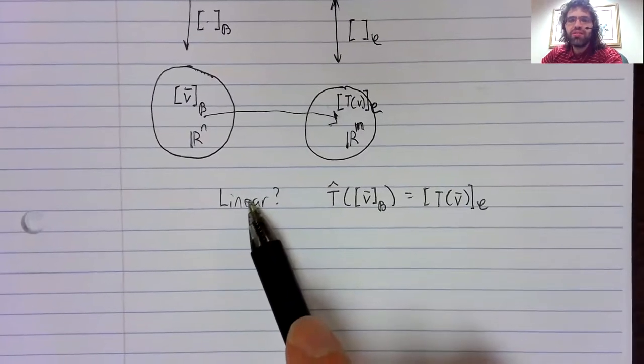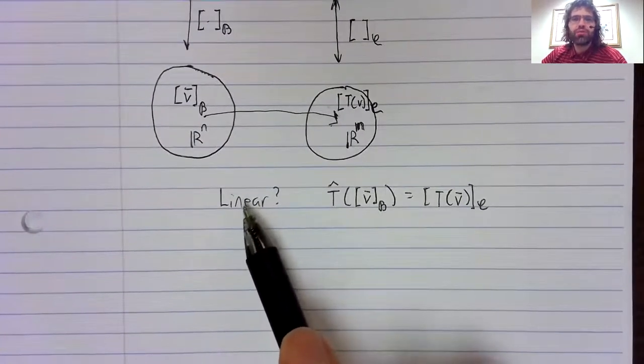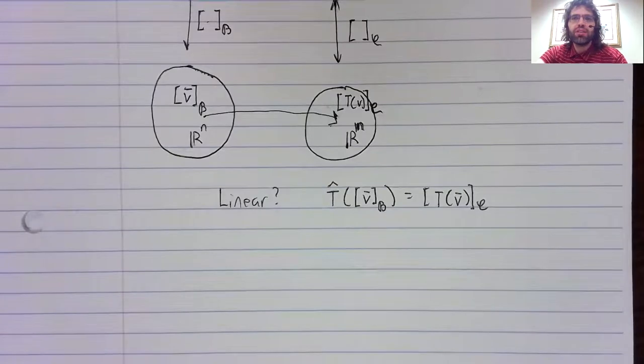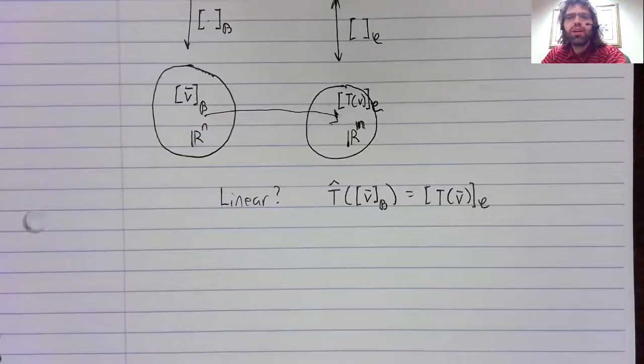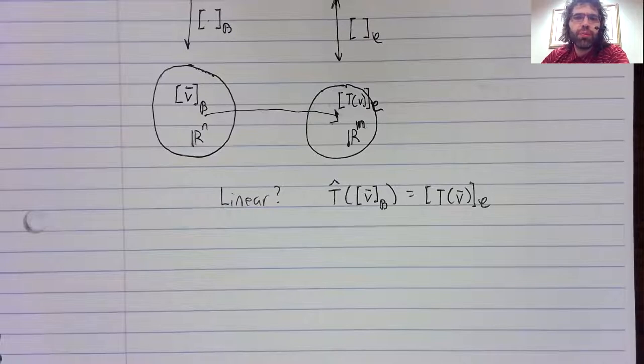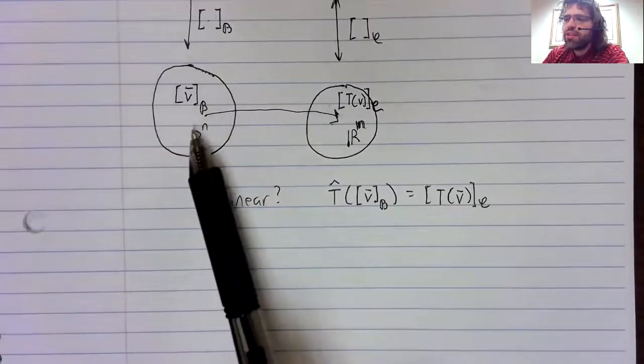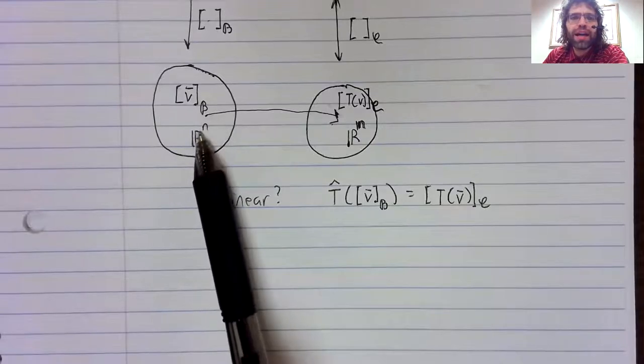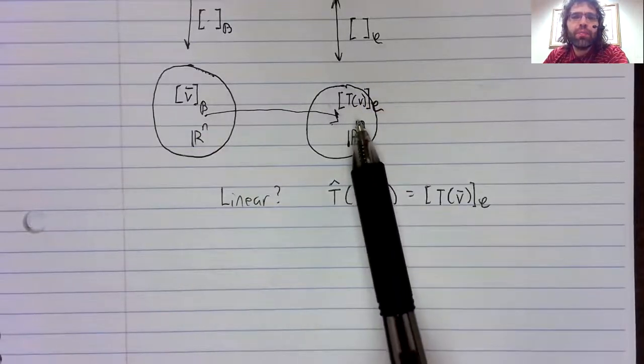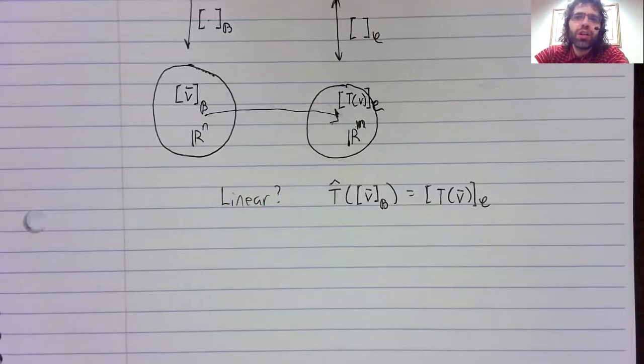And this is a linear transformation. Think back to chapter one: any linear transformation from R^n to R^m is really just matrix multiplication.